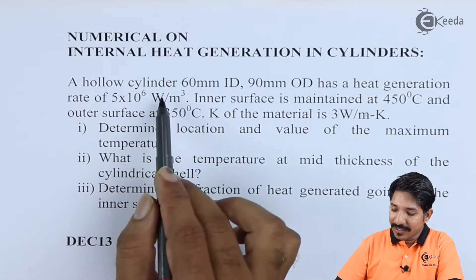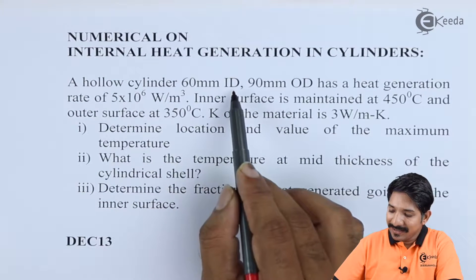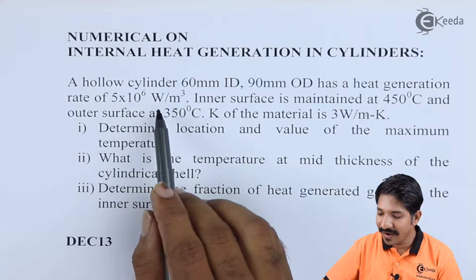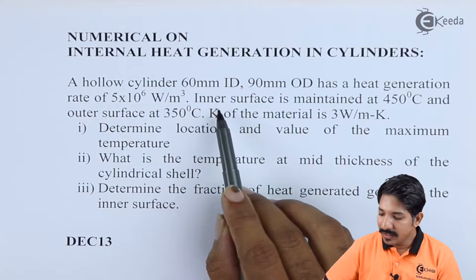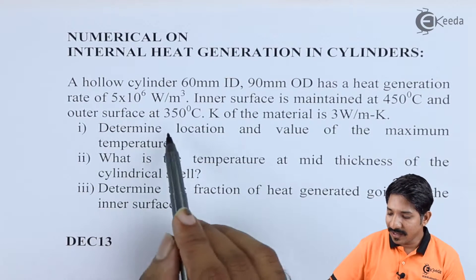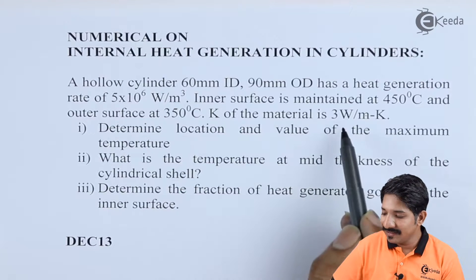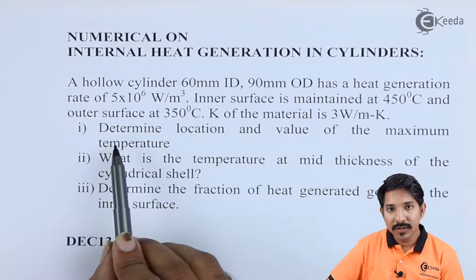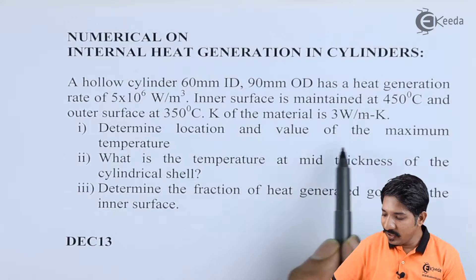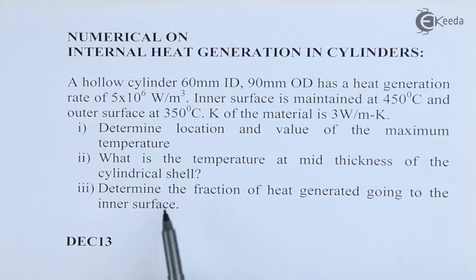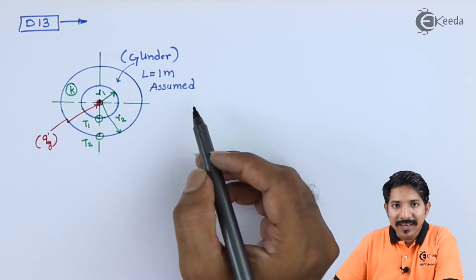The problem says a hollow cylinder with 60 mm internal diameter and 90 mm outer diameter has a heat generation rate of 5×10⁶ W/m³. The inner surface is maintained at 450°C and the outer surface at 350°C, and k of the material is 3 W/m·K. We are asked to determine: the location and value of maximum temperature, the temperature at mid-thickness, and the fraction of heat generated going to the inner surface.